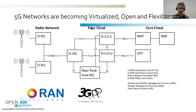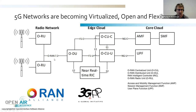There's also a non-real-time RIC, though not depicted at this level. On the left you have the radio network — the radio units — connected to the Distributed Unit using the ORAN 7.2 interface, which is a low-level split in the protocol stack.